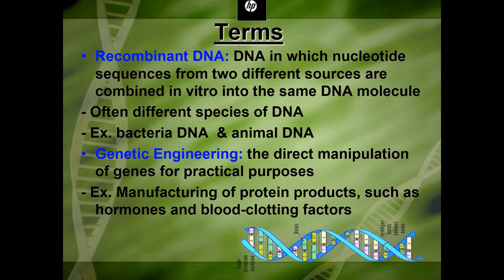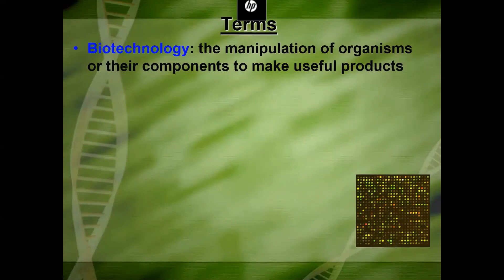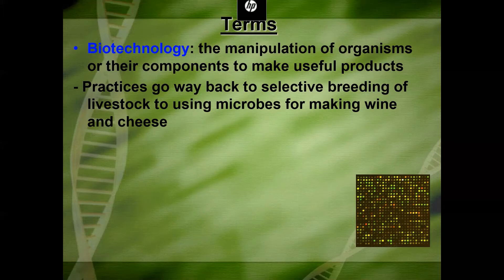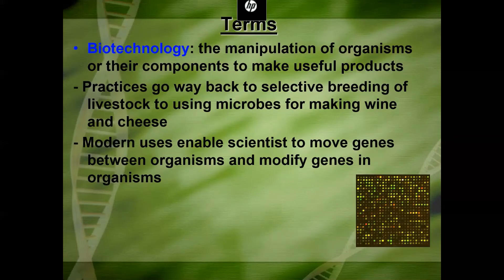Genetic engineering is now about manipulating genes and their products for practical purposes — not making clones to take over the world, but for things like manufacturing protein products such as a blood clotting factor or growth hormone. Biotechnology is the manipulation of not just a gene but also the entire organism or any of its components. Genetic engineering is part of biotechnology. Biotechnology goes back thousands of years to selective breeding of livestock, crops, and even monks using microbes to make wine and cheese.